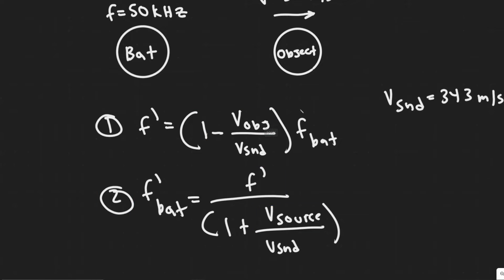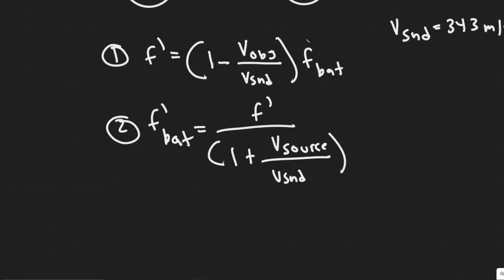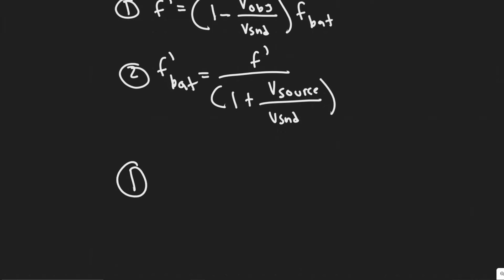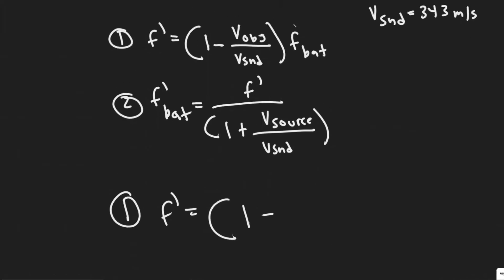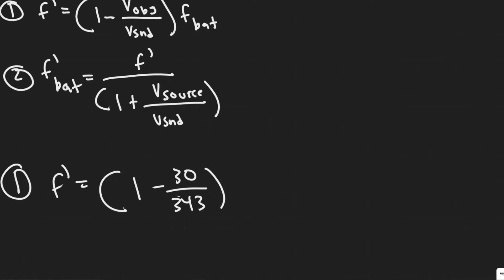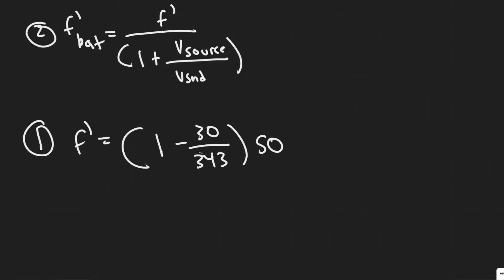You should be able to find these formulas in your textbook. Now let's plug in and solve. So f' = (1 - 30/343) × 50 kilohertz. So 30 divided by 343, one minus that value, times 50 — that gives us 45.627, so approximately 45.627 kilohertz. This is the frequency that the object is going to receive.